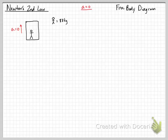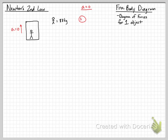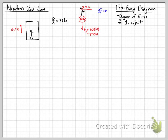A free body diagram will show all the forces acting on one particular object. The object we're talking about is the person in the elevator. Our 80 kilogram object has weight pulling down, and he's being pushed up by the bottom of the elevator with a normal force. Weight is mass times gravity: 80 kilograms times 10, which gives 800 newtons. The normal force is up.